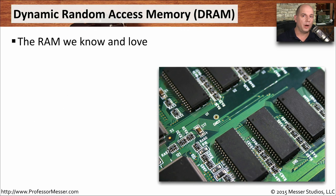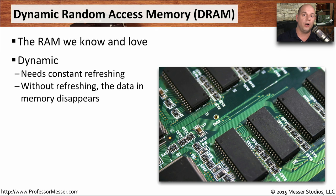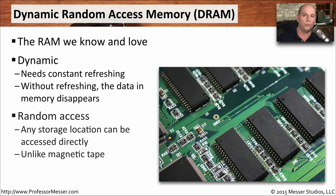When we're looking at the memory requirements for an operating system or describing how much memory we have inside of our computer, we're really talking about the dynamic random access memory. This memory is called dynamic because we are always refreshing the contents of this memory — there's always a refresh process going through this memory constantly so that it doesn't lose any information. That's different than the static RAM that didn't require the constant refresh. With dynamic RAM, we can put information anywhere on these memory chips and instantly access that information just by referencing a particular memory address.